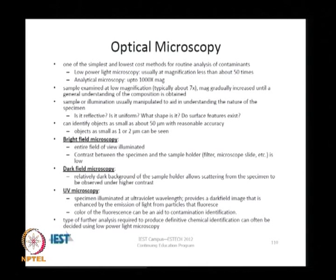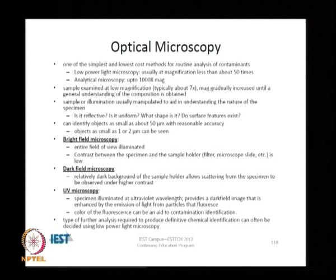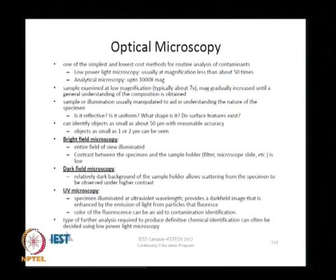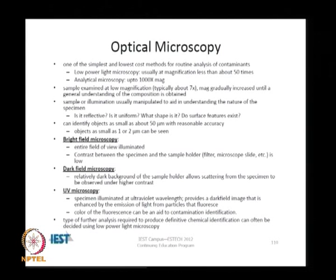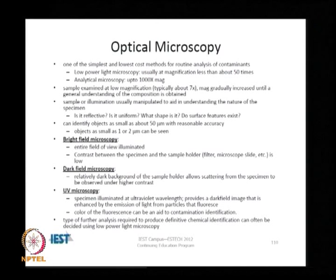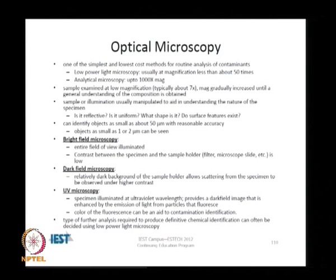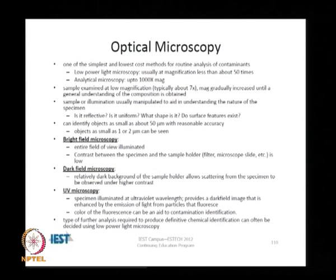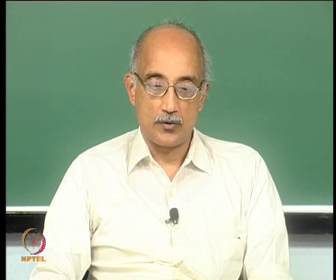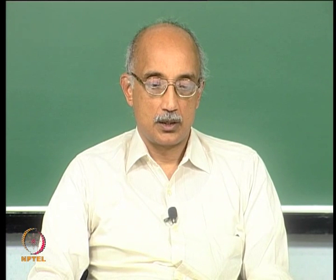To recap the key points of optical microscopy: it is a simple, low-cost method widely used for routine analysis, with magnification less than 50 times, though analytical microscopes can provide up to 1000x. The sample is examined initially at low magnification (5 to 7x) and then gradually increased. Illumination is manipulated to aid understanding — you can assess whether the surface is reflective, how uniform it is, its shape, and predominant surface features. You can see objects as small as 50 microns or even 1 to 2 microns, but resolution is poor, which is why we need to go to electron microscopy.